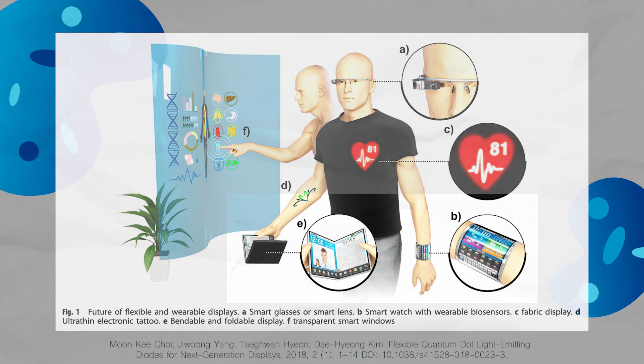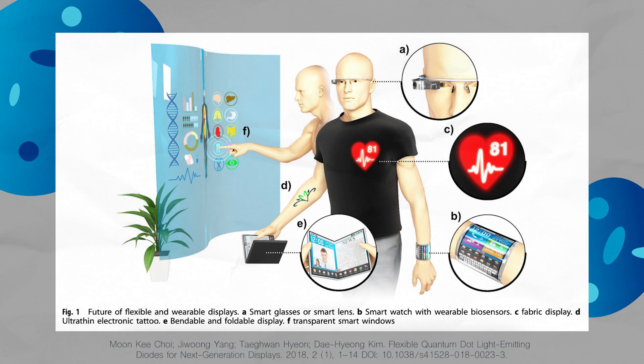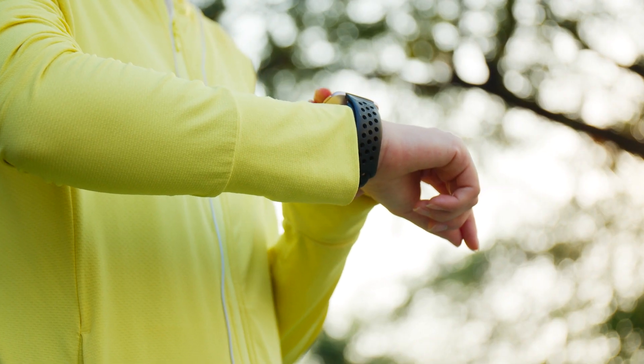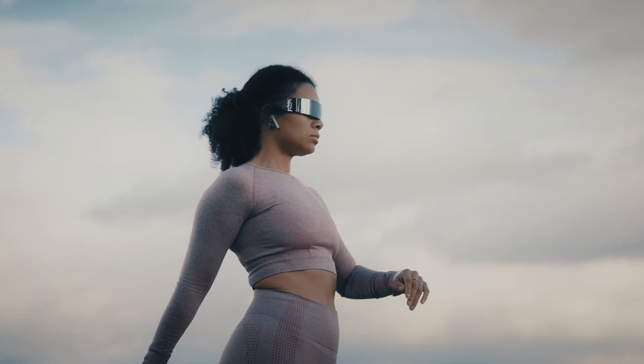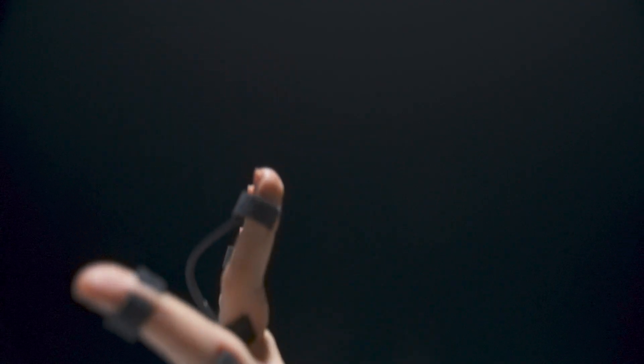By embedding quantum dots into polymers or other flexible materials, we achieve electronic devices that are not only bendable, but can also display information or change properties based on input, all while retaining their functional integrity. Imagine a future where your wearable tech adapts seamlessly to your movements, or screens that roll up, all thanks to the flexible nature empowered by quantum dots.